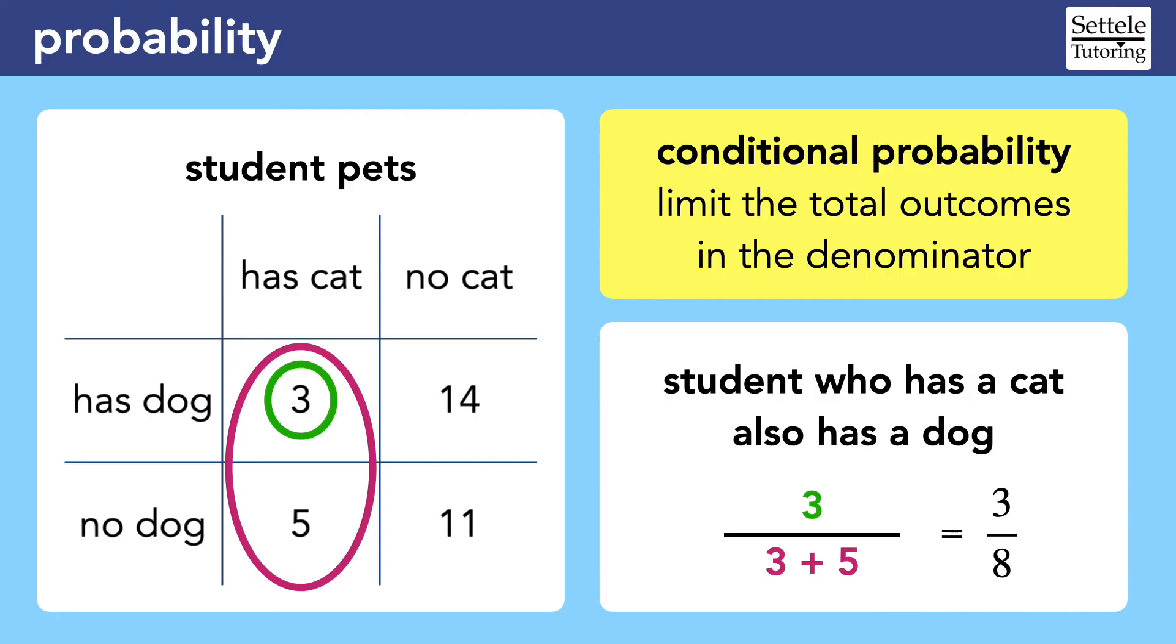If you're confused, that's okay. This is a confusing idea. I recommend rewinding this video and comparing the previous example to this one, until you understand how the slight change in the wording of the question affects where we look in the chart for the denominator and the final probability. If you can master conditional probability, you are likely going to get every single probability question right on your SAT.